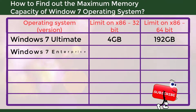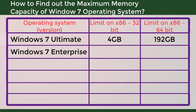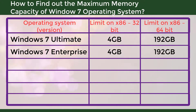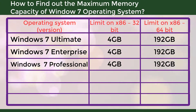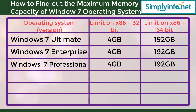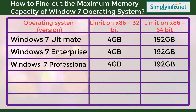For Windows 7 Enterprise, for 32-bit it is 4 GB again, and for 64-bit it is 192 GB. For Windows 7 Professional, the limit for 32-bit is 4 GB and the limit on 64-bit is again 192 GB.